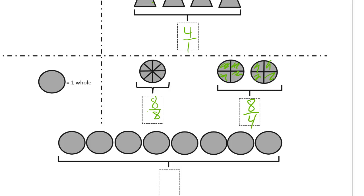And these are all wholes, so it's 1, 2, 3, 4, 5, 6, 7, 8 of those, so it's 8 wholes, like that.